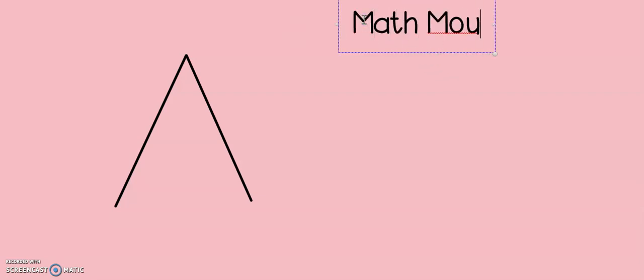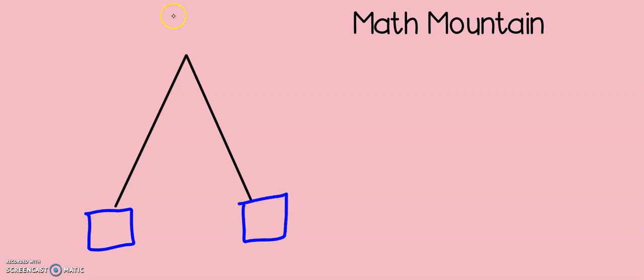This is called a math mountain. Math mountains are tools that we can use to show addition and subtraction. There is one thing missing from our math mountain, and that is the numbers. On a math mountain, there are three different numbers: two numbers at the bottom and one number at the top. The top number is the highest number. In my class, we often call the top number the king of the mountain, and only the largest number gets to be the king of the mountain.